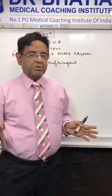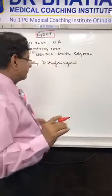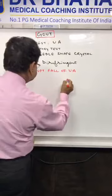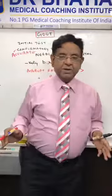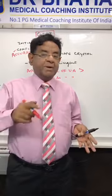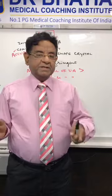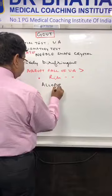Even in acute gout, serum uric acid level may be normal. Importantly, an abrupt fall in serum uric acid is a more common cause of an acute gout attack than an abrupt rise. That is why allopurinol is never given in acute gout — it is contraindicated during an acute attack.